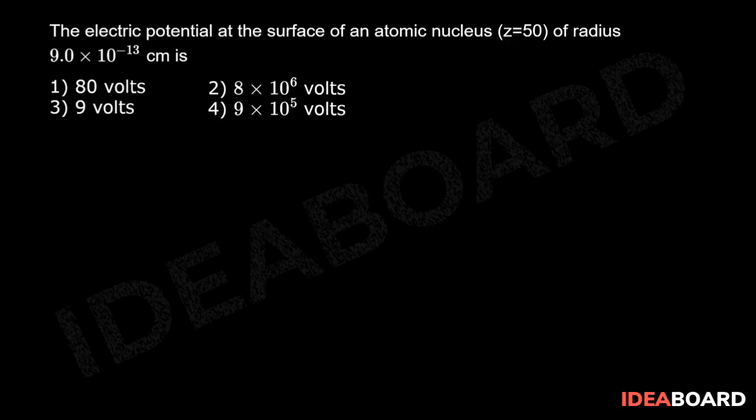So electric potential due to the point charge, we know V is equal to the expression 1 by 4 pi epsilon 0 into Q by R.